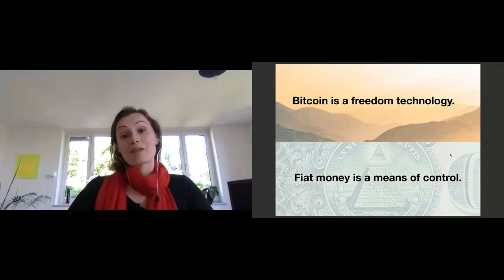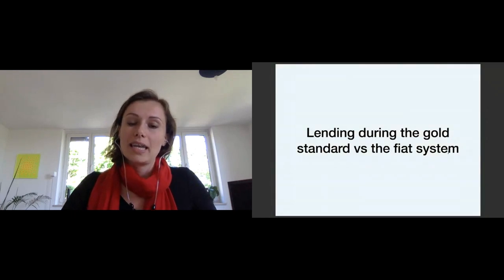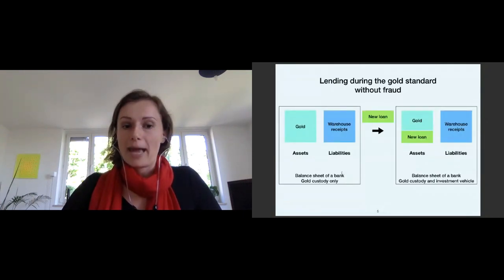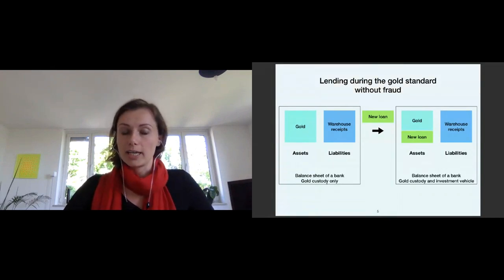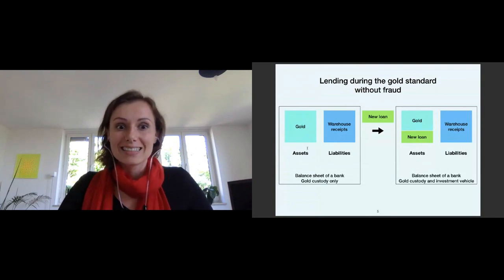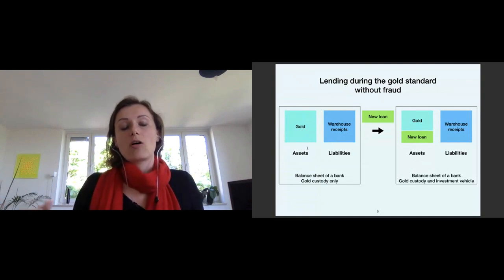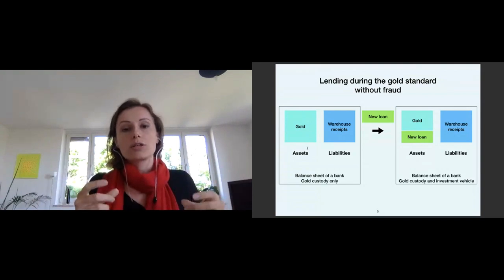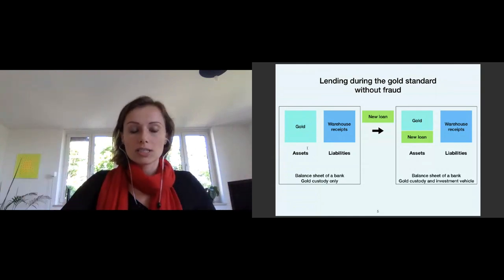I'd like to go back in time with you to the gold standard and show you how lending works during that era. Here you have a bank — this is a balance sheet of a bank. On the asset side you see only gold. This bank was a gold custody only, and for the gold it held in custody it was giving out warehouse receipts. People could then use these warehouse receipts as a medium of exchange, since you could take a receipt to the gold custody and get your gold out.